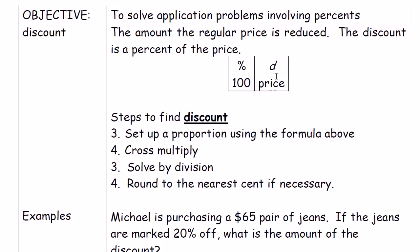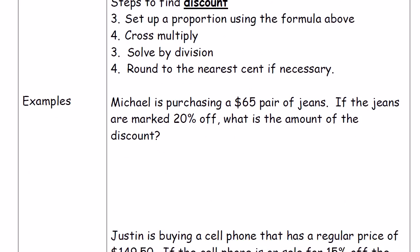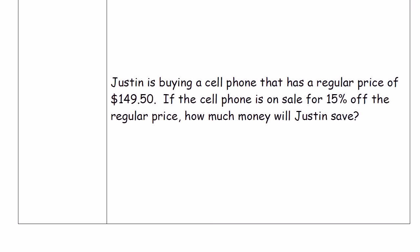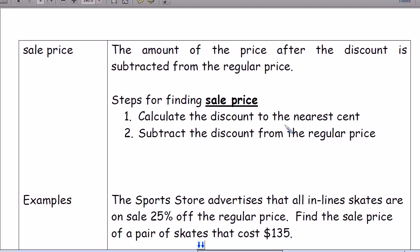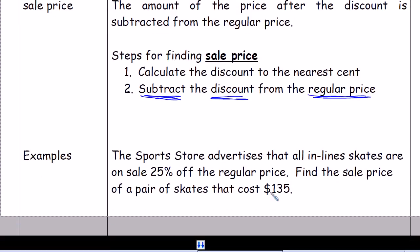For discount, it's the same proportion box, except instead of T for tax or tip, you use D for discount. Same process: set up the proportion, cross multiply, solve by division, and round to the nearest cent. The key difference is that for sale price you subtract the discount — not add it — from the regular price. For example, a $135 pair of skates at 25% off: find the discount, subtract it from $135, and you get the sale price.